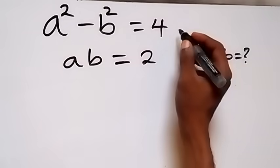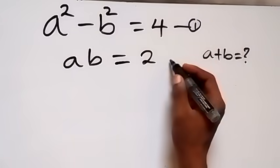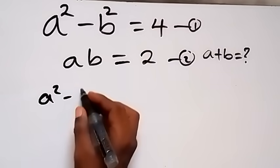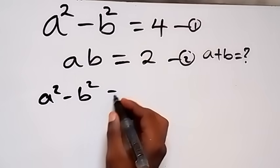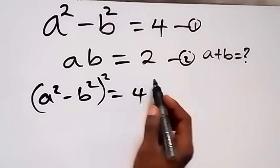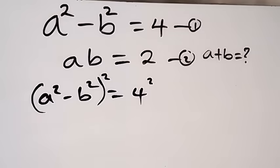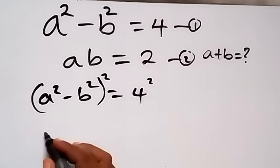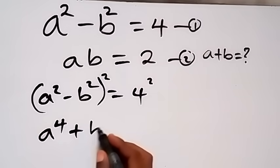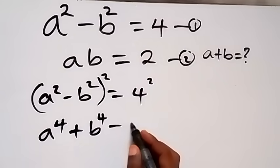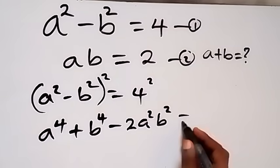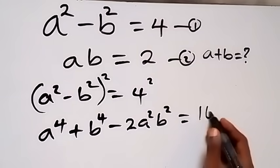From equation 1, we have a squared minus b squared equals 4. Now let's square both sides. Expanding the left side gives us a raised to power 4 plus b raised to power 4 minus 2a squared b squared, which equals 16, since 4 squared is 16.